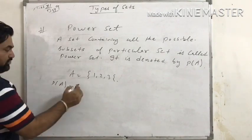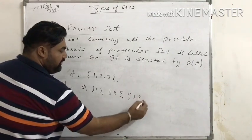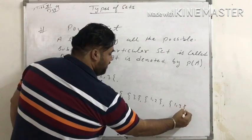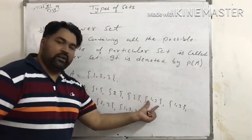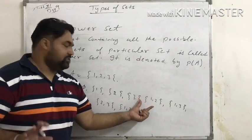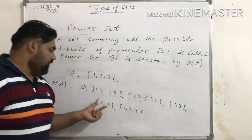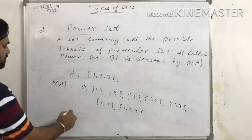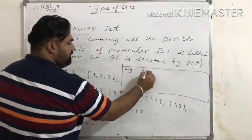The possible subsets of A are: first the empty set, then single elements {1}, {2}, {3}, then double elements {1,2}, {1,3}, {2,3}, and finally {1,2,3}. Remember, {1,2} and {2,1} are the same thing — order does not matter in sets. So the total number of subsets is 1, 2, 3, 4, 5, 6, 7, 8 — the answer is 8 subsets.